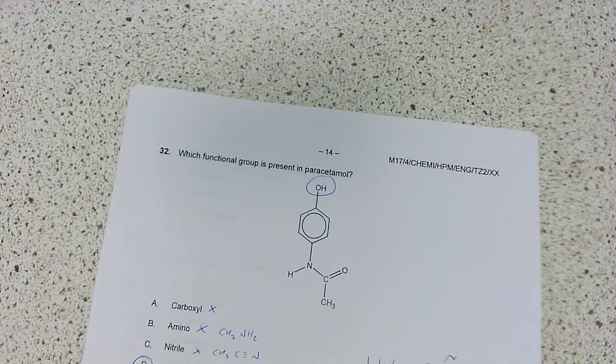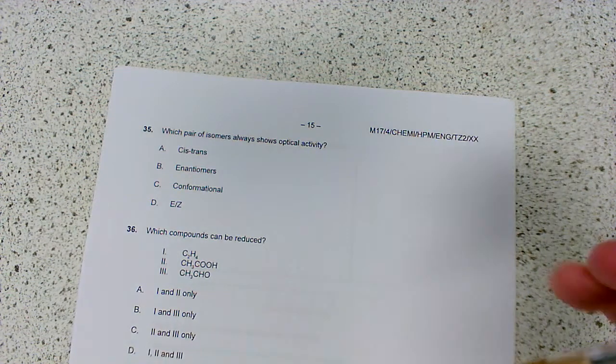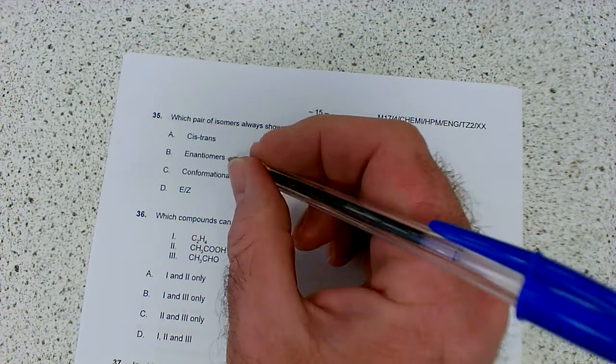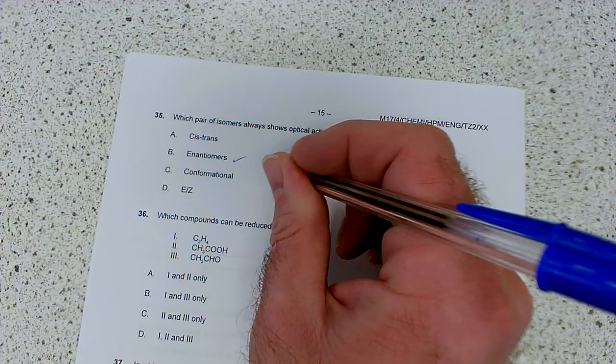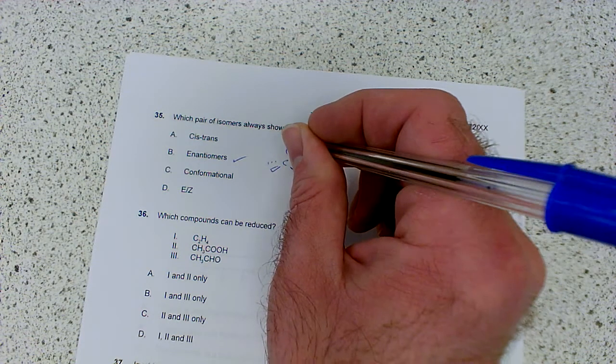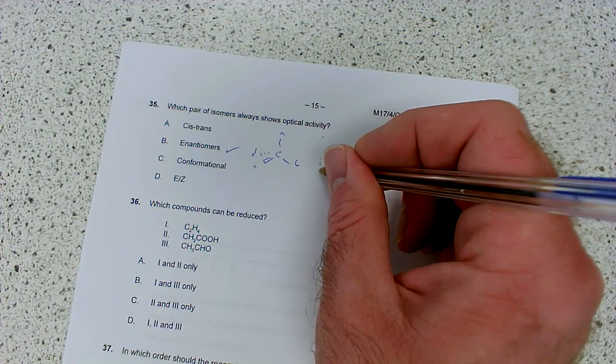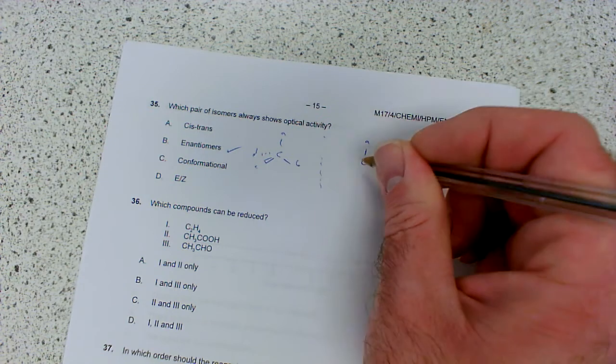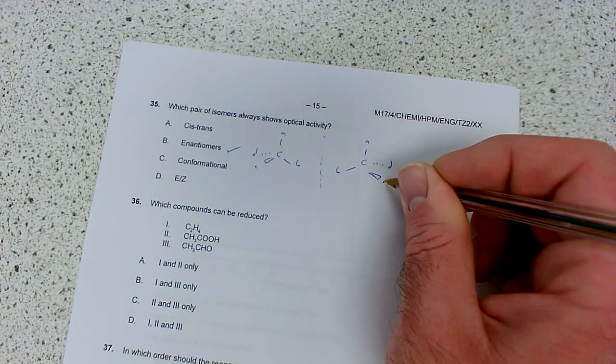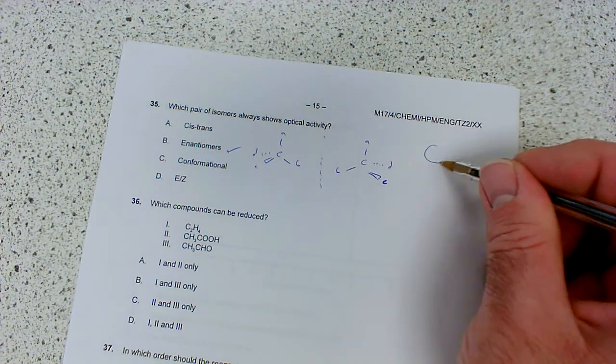Which pair of isomers always show optical activity? Cis-trans, enantiomers, conformational, E-Z? It's enantiomers. That's where you've got four different groups attached to a carbon. Let's say A, B, C, and D as different functional groups. One enantiomer has its mirror image with groups arranged differently, and they rotate plane-polarized light left or right.